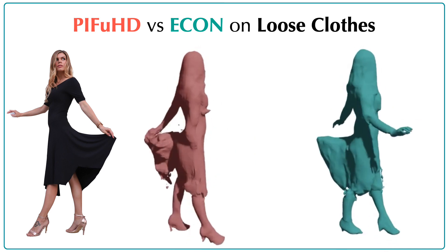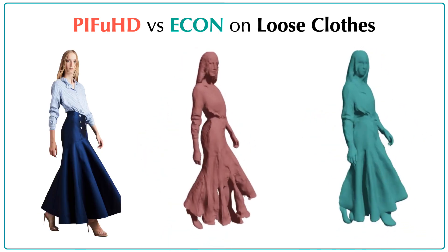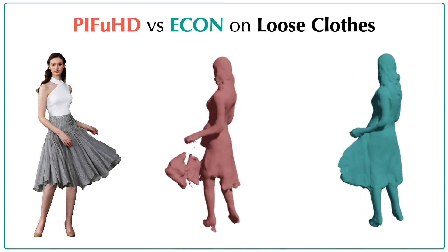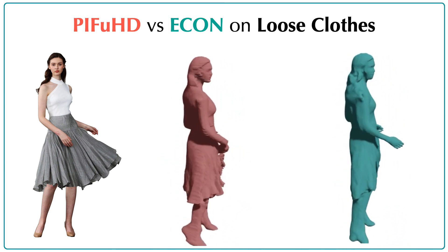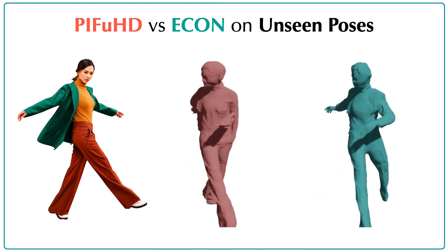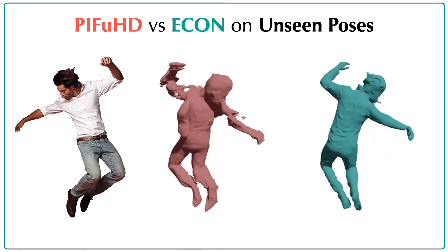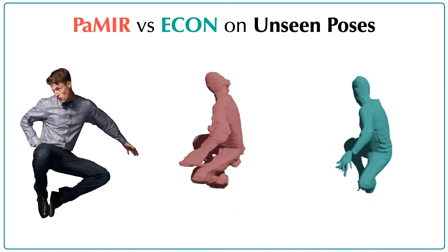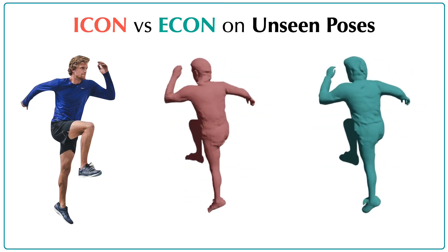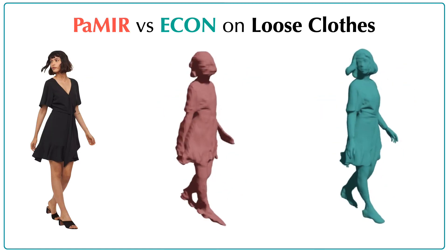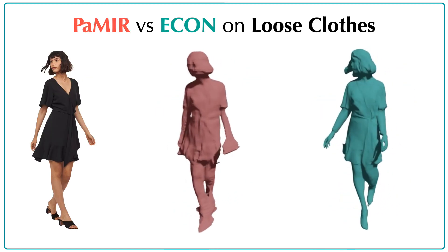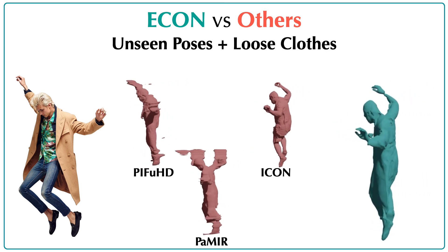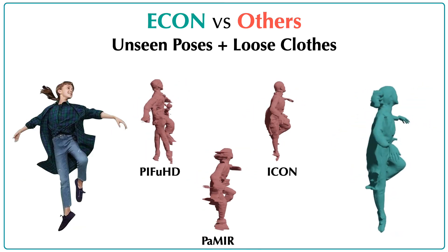Here we compare ECON with other state-of-the-art approaches. ECON can reconstruct clothed 3D humans from fashion images, regardless of the outfit, yet with more detailed wrinkles than PIFu HD. For humans with previously unseen poses, where PIFu HD often fails, ECON recovers high-quality 3D humans as well. The local details look more realistic than ARCH or ICON. For images with both challenging poses and loose clothing, ECON reconstructs dressed 3D humans with greater realism and robustness than all previous methods.